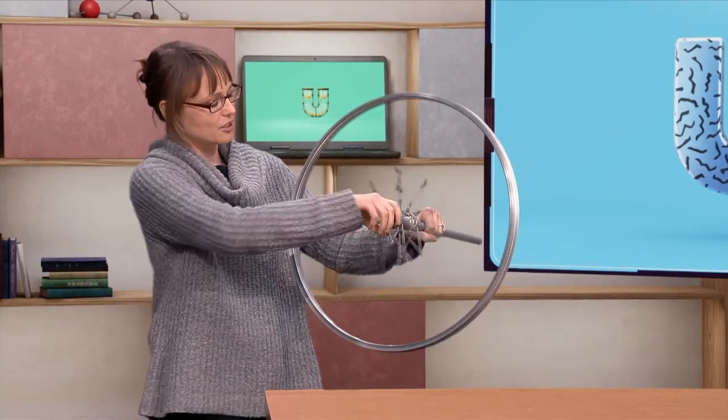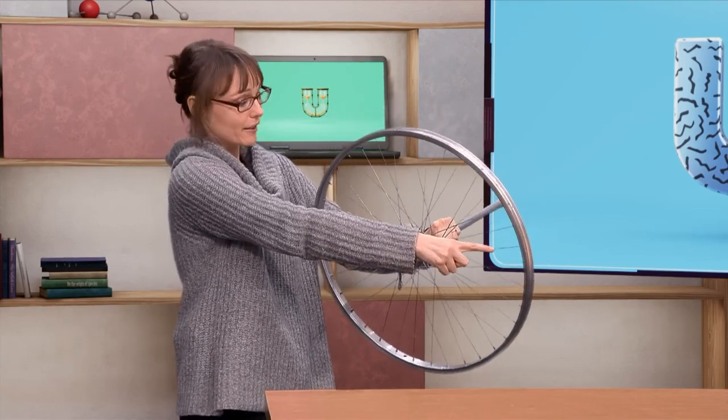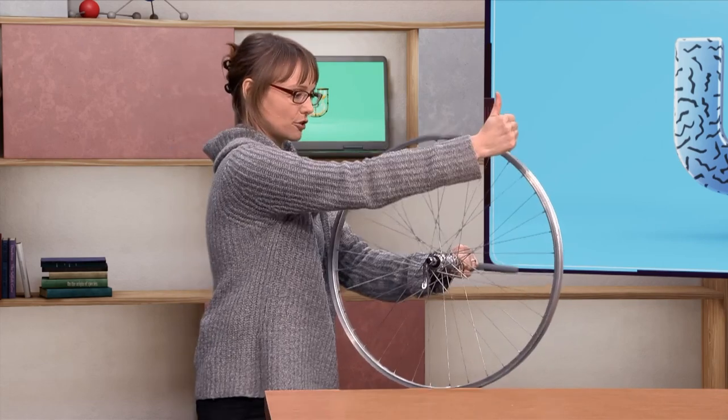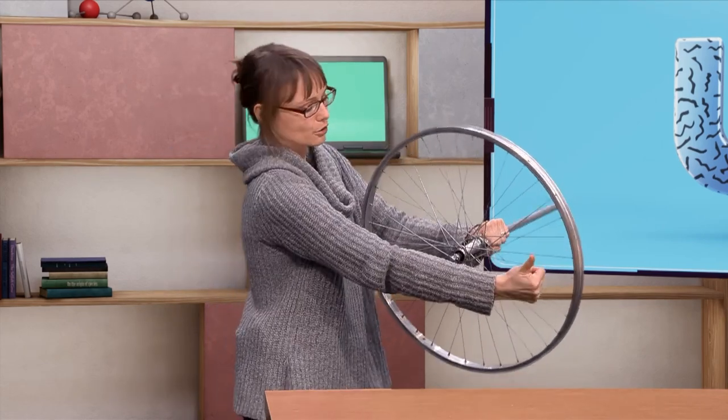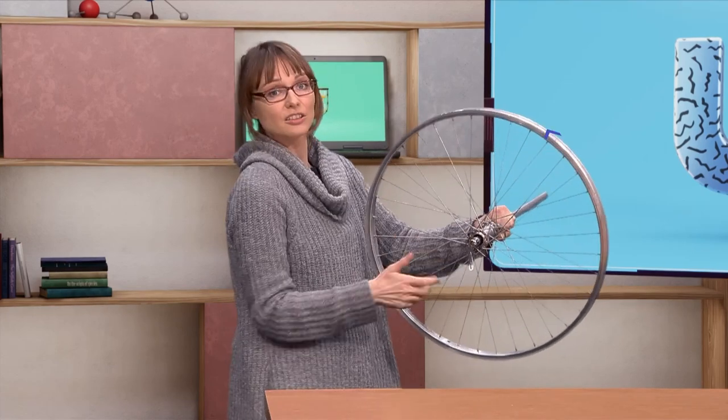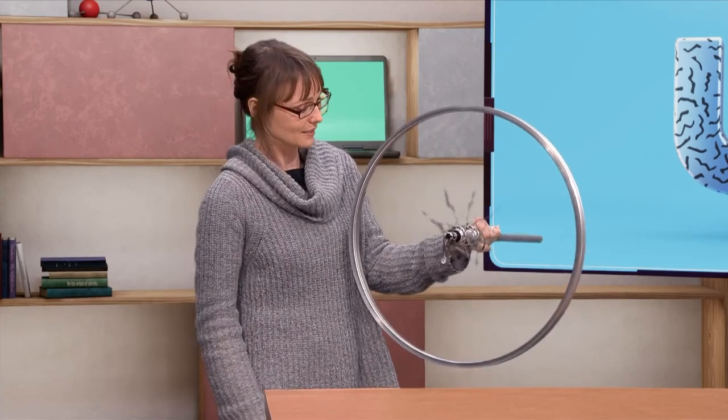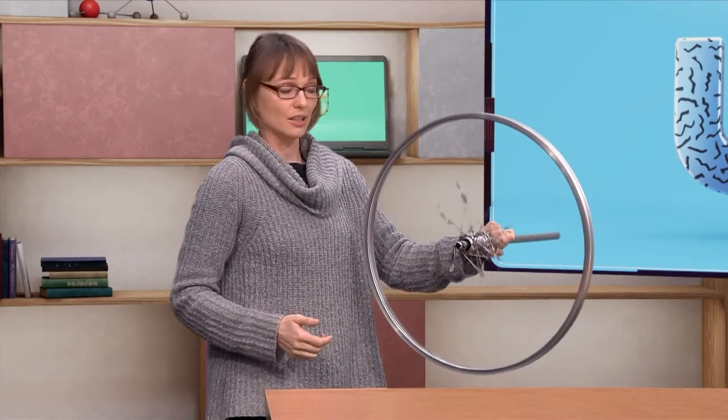If I am now tilting this wheel, what I am doing is, I am forcing this point to change the direction of its velocity. Instead of just going up, it's now also going a little bit to the right. So, there was a change in velocity to the right. And because this velocity is so high, it's spinning really fast, also this change is really large.